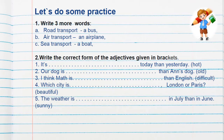Let's do some practice with a few more words. A: road transport, example, a bus. B: a transfer in a plane. C: sea transfer, for example, a bus.